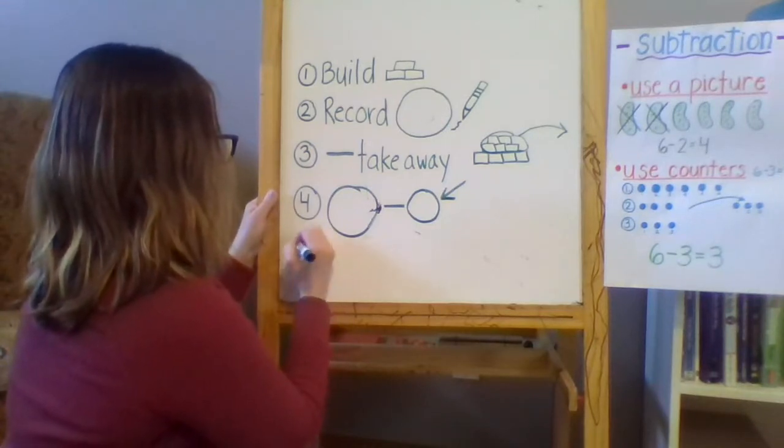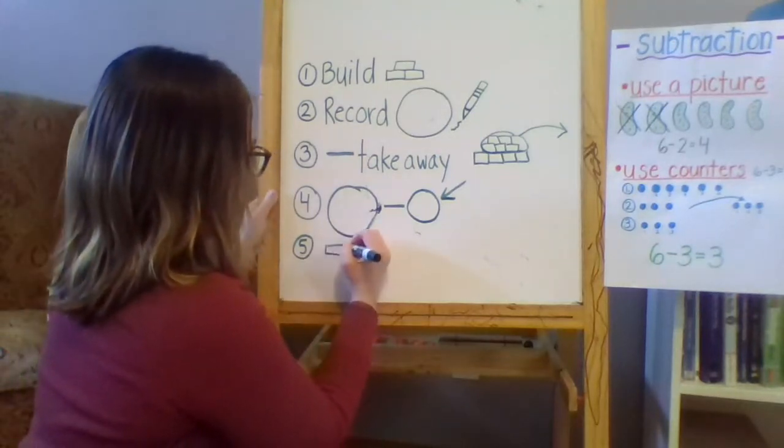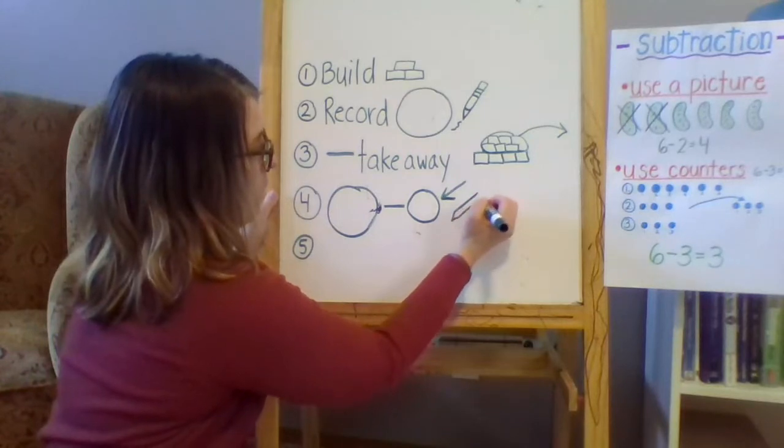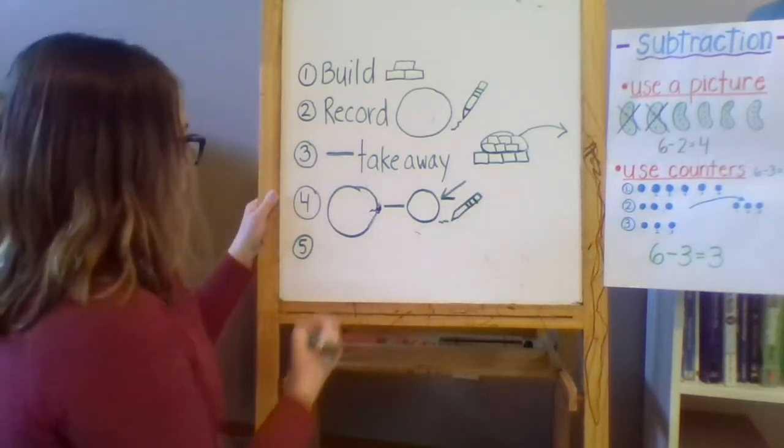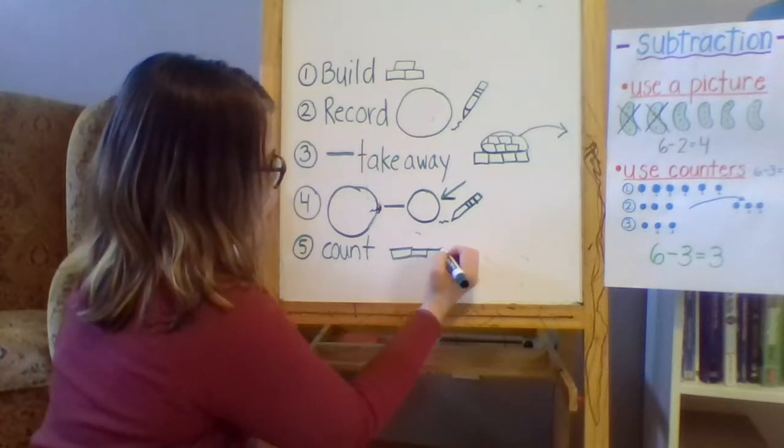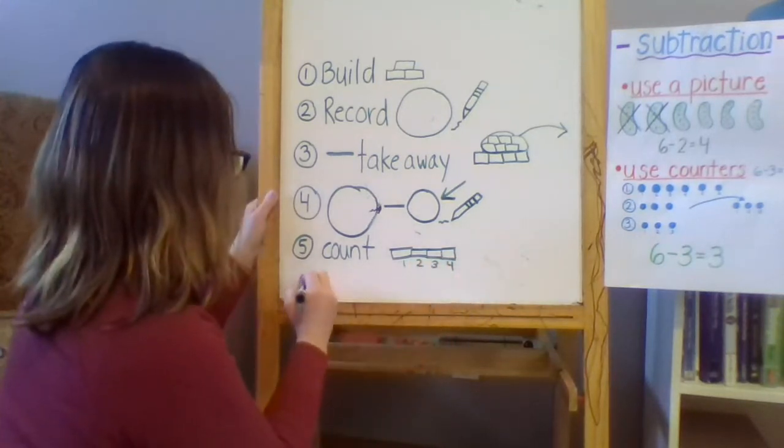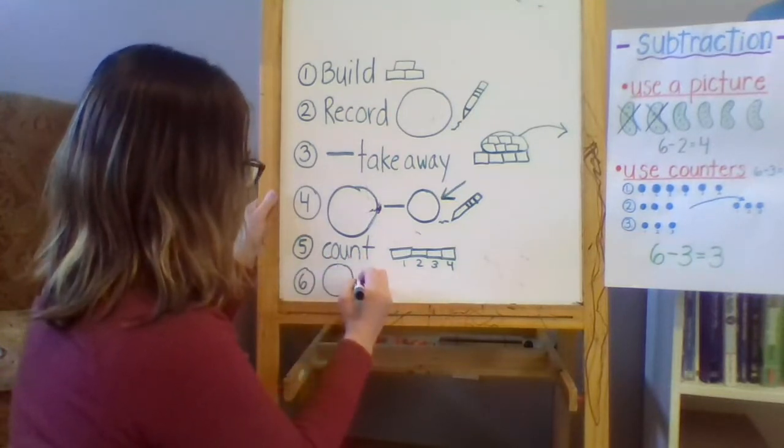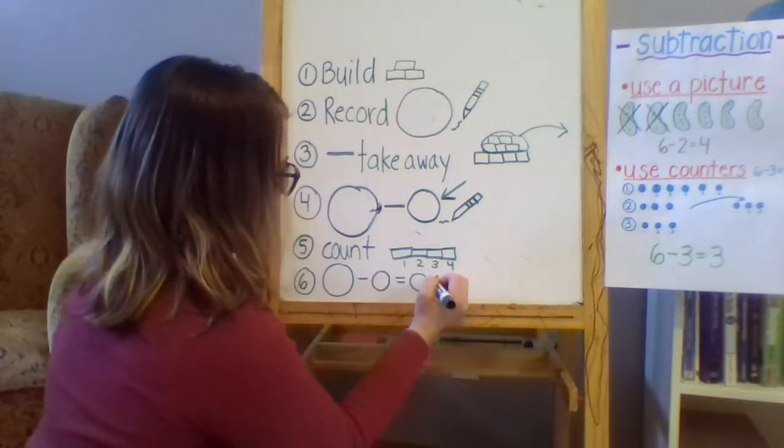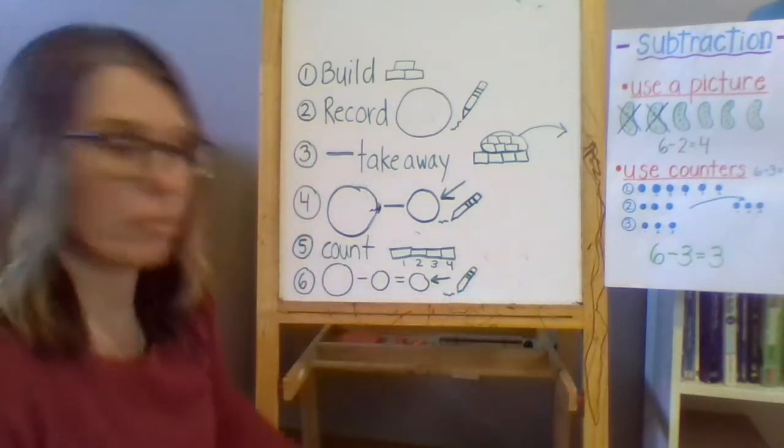The next step number five is to count. Count how many are left. So you're going to use your pencil for this one too. Count how many are left. And then your final step is to finish the subtraction equation and fill in the difference. What is the answer? How many are left? Those are the steps.